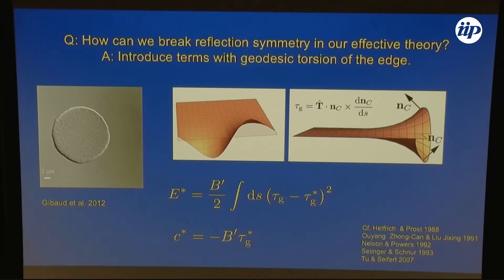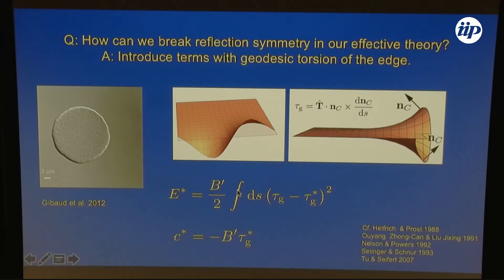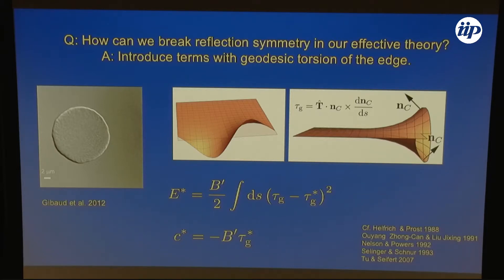There is a natural vector we can look at: the normal to the surface. We can ask how fast that twists around the edge as we move along it — that's the geodesic torsion. So we can write down another edge energy which is basically a preference for having some specific spontaneous torsion τ_G*. There's a stiffness B prime, which we'll take to be the same as the bending stiffness of the edge. And there's a cross term C* — our chiral term. We don't have a direct geometric argument for what these quantities should be, but we write it down because it's allowed by the symmetries of the problem. There's precedent for having the chirality of the constituents leading to chirality of the shape.